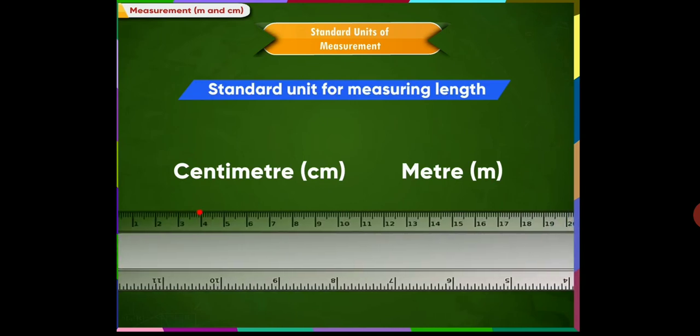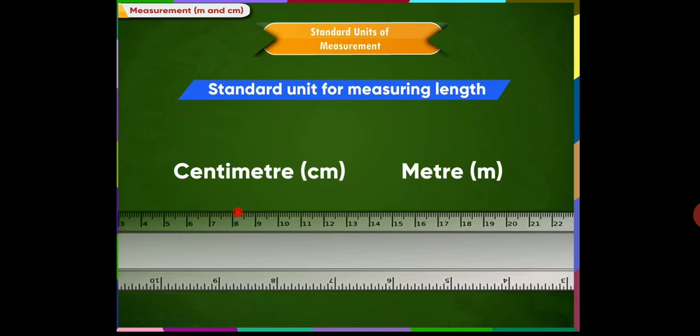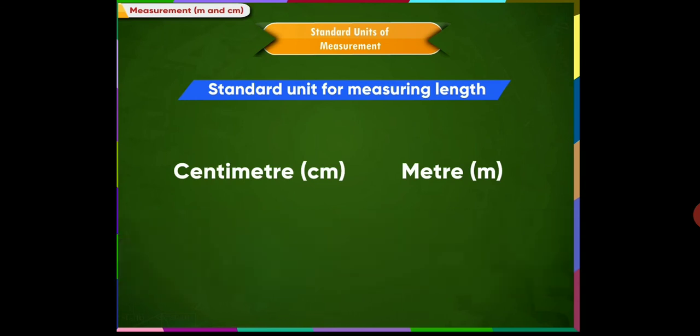One meter is divided into 100 smaller units called centimeter. We can also say 1 meter is equal to 100 centimeters. 1,000 meters are put together to make a bigger unit called a kilometer.